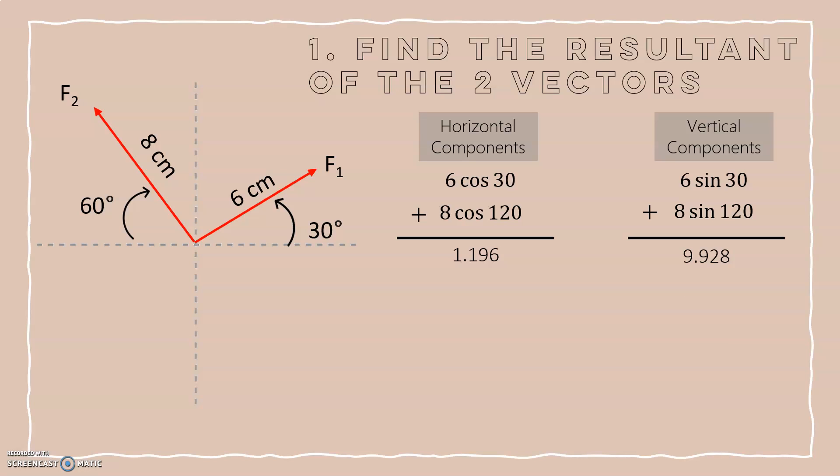Now let's apply these numbers and get our magnitude. We are going to be finding our magnitude using the Pythagorean theorem. So we are going to be doing square root of 1.196 squared plus 9.928 squared.